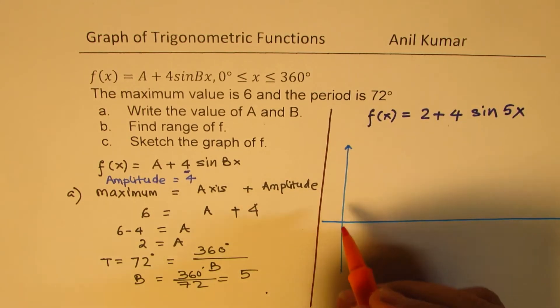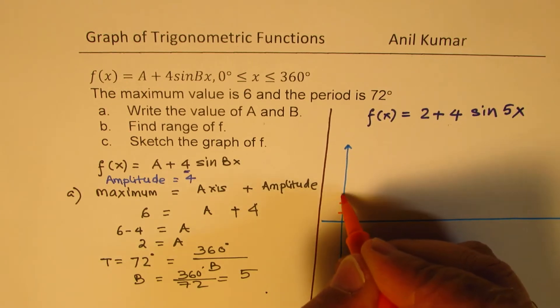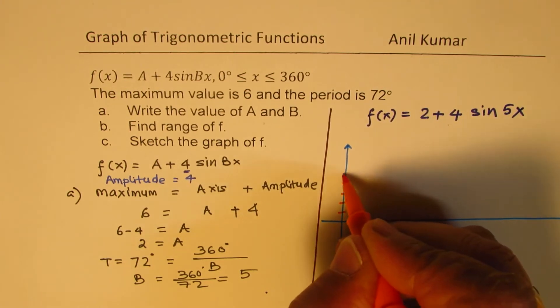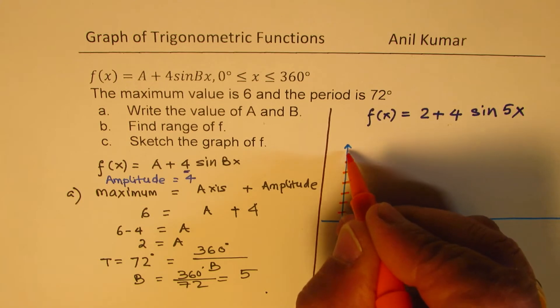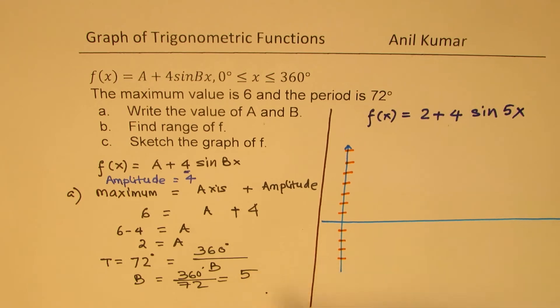So, basically, let me just take y along this direction. The axis is 2. So, let us say this is 2, 4. Let's say 1, 2, 3, 4, 5, 6, 7. 6 is the maximum. Let's go negative also, 1, 2, 3, 4.